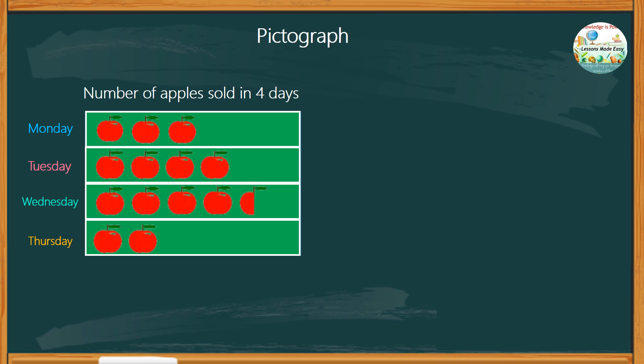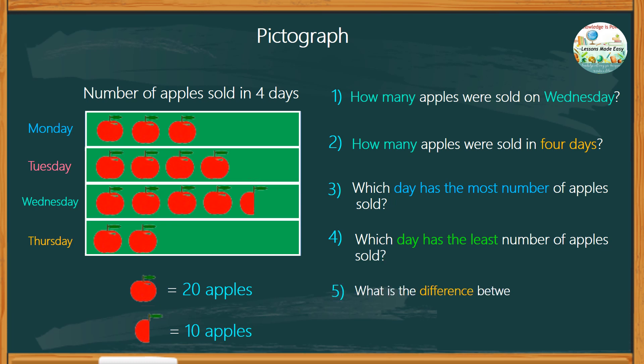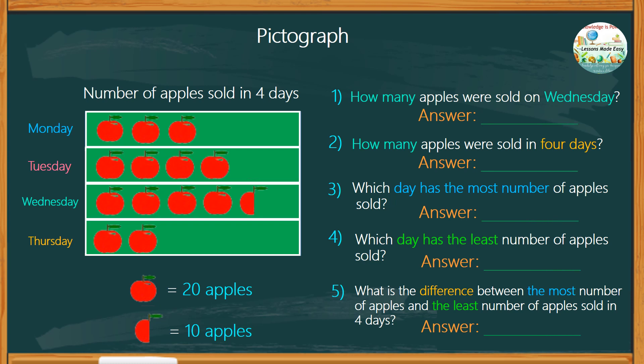Study the pictograph below and answer the guide questions. Remember to look at the given scale. How many apples were sold on Wednesday? How many apples were sold in 4 days? Which day has the most number of apples sold? Which day has the least number of apples sold? And lastly, find out what is the difference between the most number of apples and the least number of apples sold in 4 days. You can always pause this video if you want to use this as an exercise for your students in the classroom.